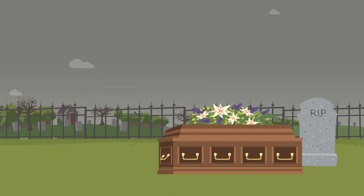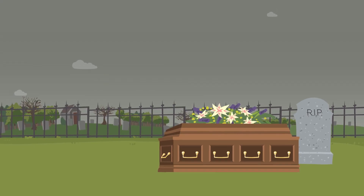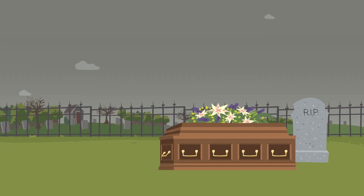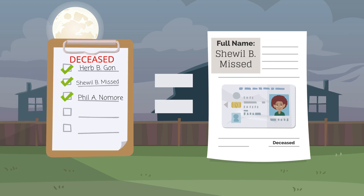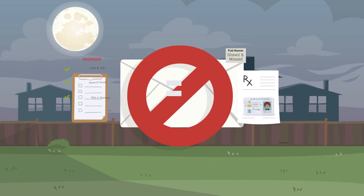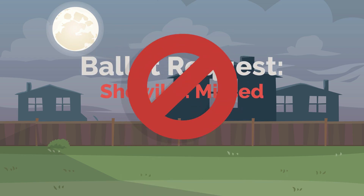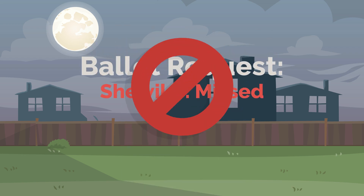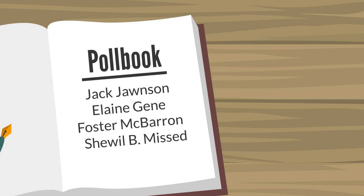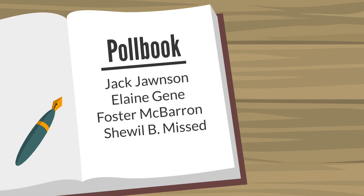Election officials compare these lists to their voter registration list, and if a registered voter's information matches, their registration status will be adjusted accordingly. This means, for example, that a mail-in ballot could no longer be requested under that voter's name, nor would that voter show up as eligible to vote in a local poll book on Election Day.